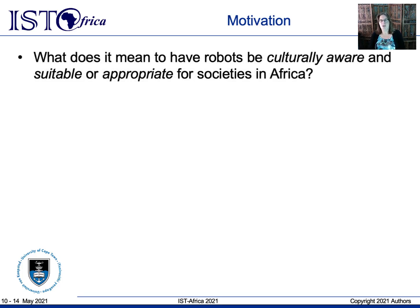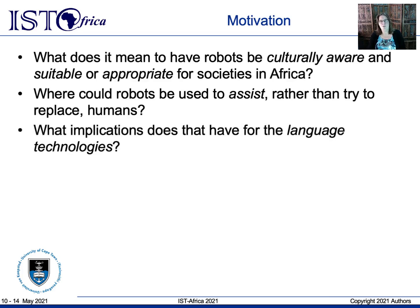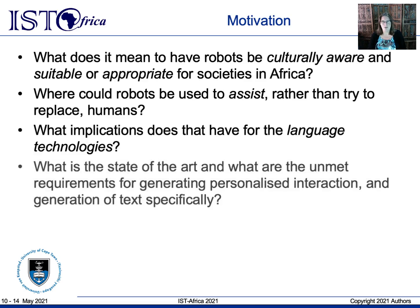A broad general question is what it means for a robot to be programmed to be culturally aware. Slightly more specific is where robots could assist humans rather than replace us. Narrowing down further, within assisting humans, what does that mean for the language technologies that robots will need to be equipped with? The specific question the paper tries to report on is the state of the art and the unmet requirements for generating relevant, personalized interaction, including text as a precursor to speech.